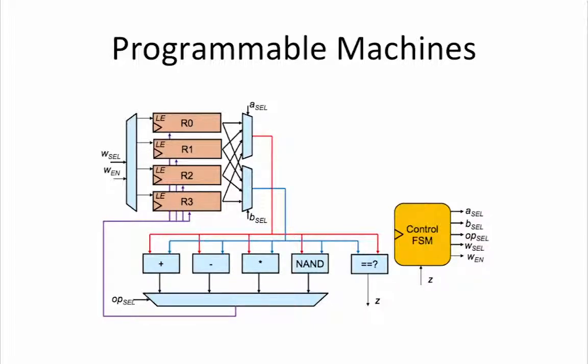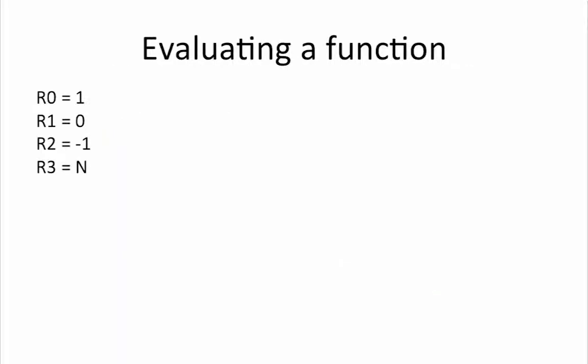If it is supposed to be written back to the register file, then the Wsel control signals select to which of the registers the result should be written. The yellow box is the control FSM. It generates the control signals for the rest of the datapath based on the operations that you want to perform. Suppose the initial value of our four registers is R0 equals 1, R1 equals 0, R2 equals minus 1, and R3 equals N. We want to evaluate the result of the function 3 times N minus 2 and store the result into R3.